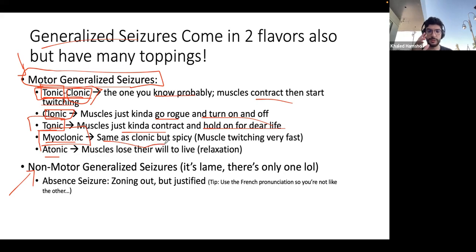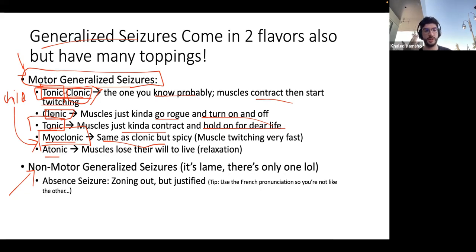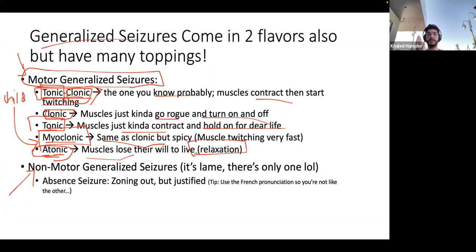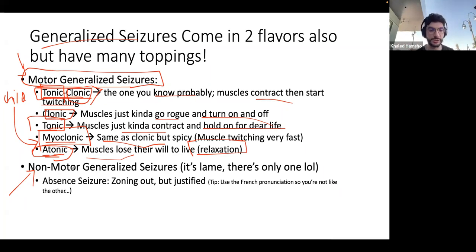During the tonic phase, every muscle contracts — even the airway, causing choking. The clonic phase follows with jerky shaking. A clonic-only seizure is just the jerky movement; a tonic-only seizure is just contraction without the clonic phase. A myoclonic seizure is similar to clonic but faster twitches, often occurring in children after waking up in the morning — called juvenile myoclonic epilepsy if recurrent. An atonic seizure means muscles lose all tone and the patient drops backward, which is dangerous due to head trauma risk.